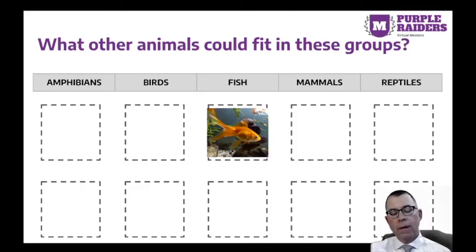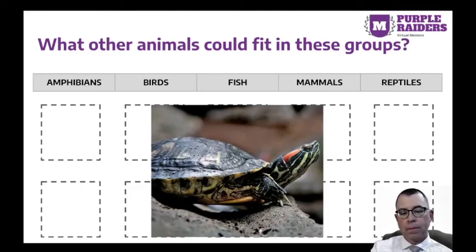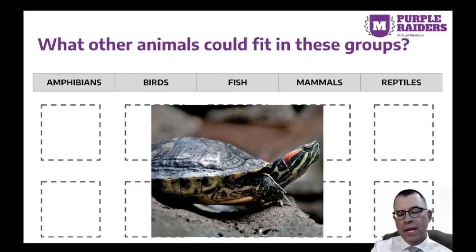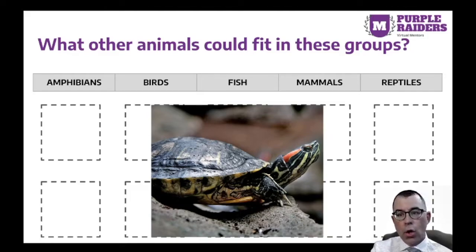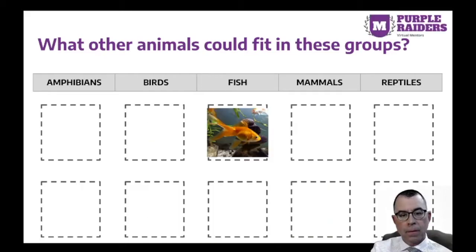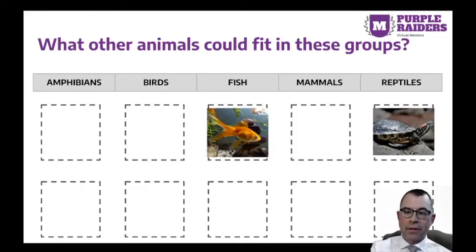Let's try another. Here we have a turtle. The turtle is a cold-blooded animal with a hard shell that covers and protects its backbone. Turtles also lay eggs. What group does the turtle belong to? A turtle is classified as a reptile. How did you do with your classification?